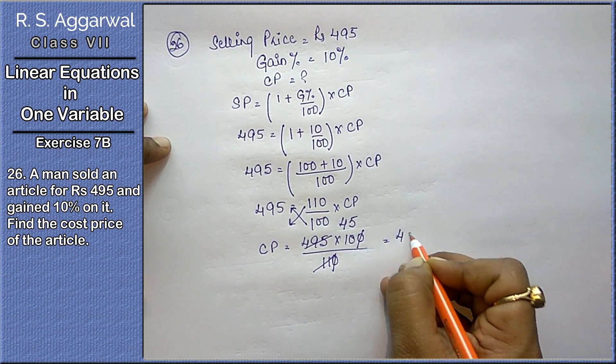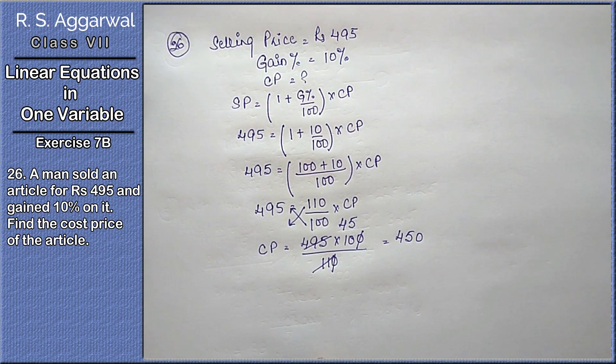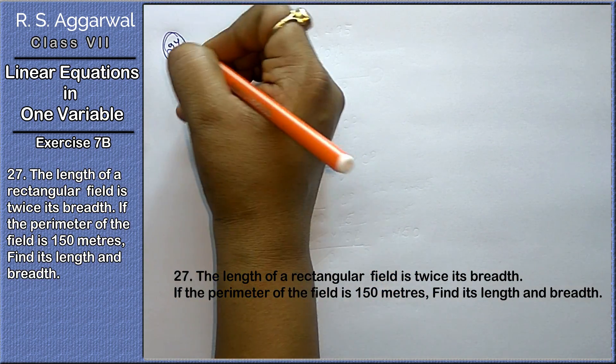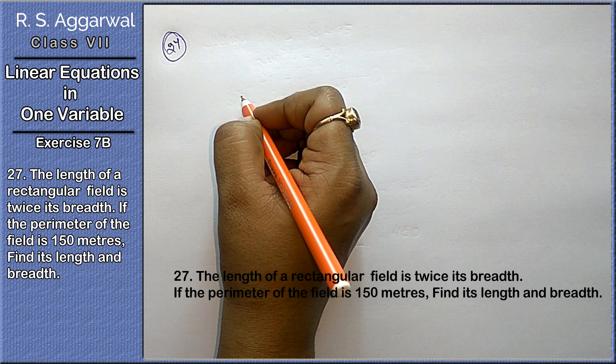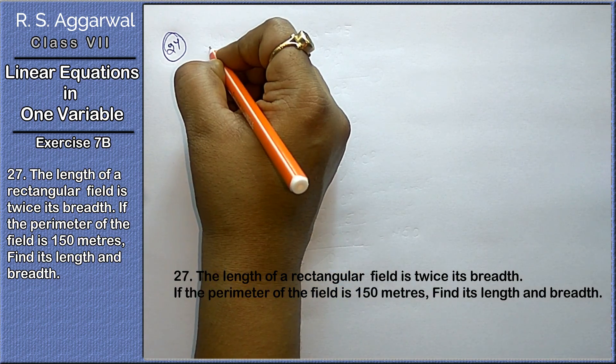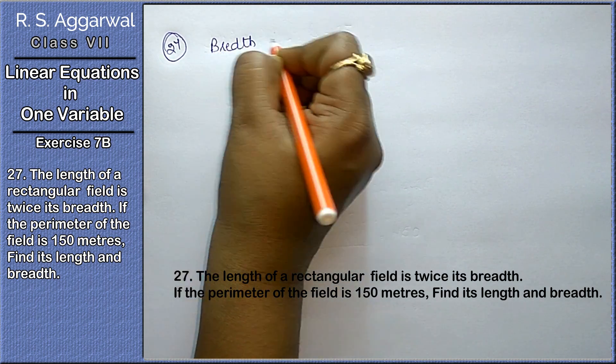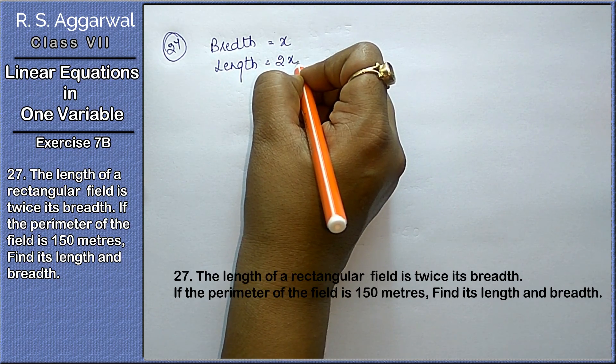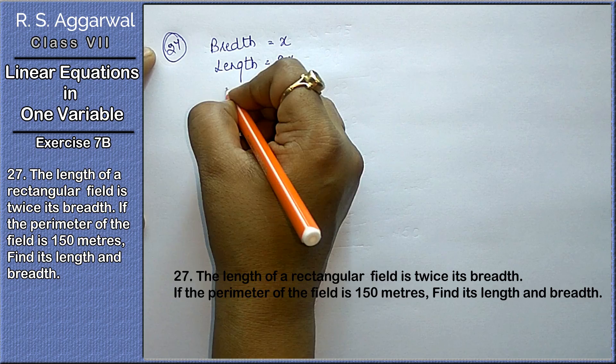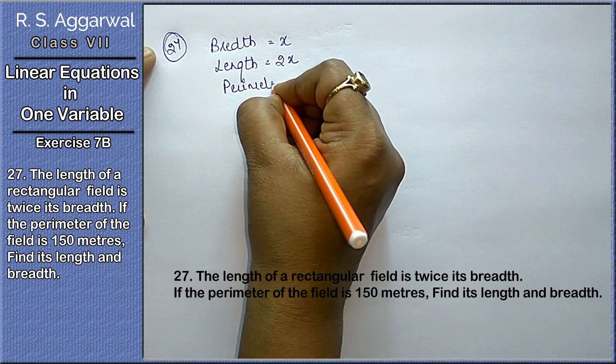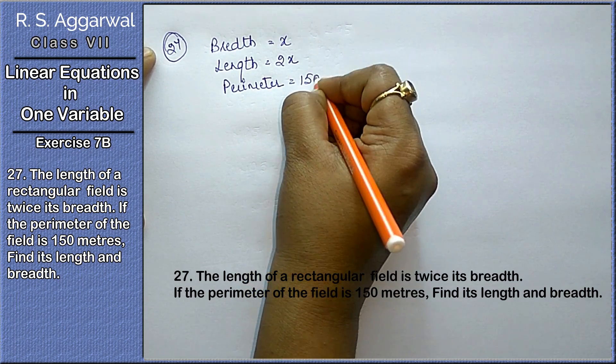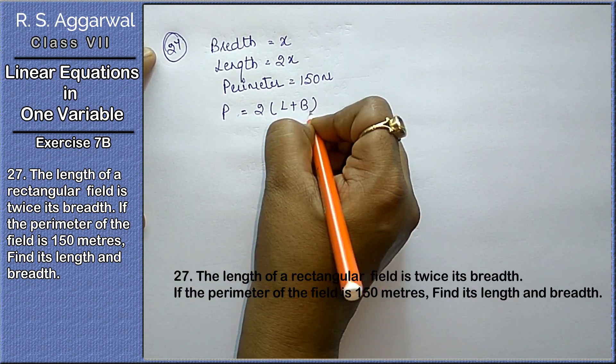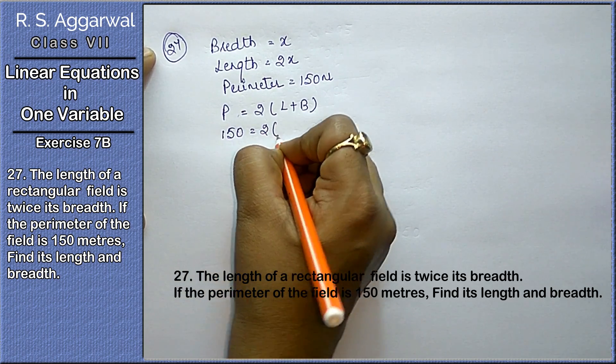Now let's do the next question, 27th question. The length of the rectangular field is twice its breadth. Breadth is not given to us, so let the breadth be x. So length becomes 2x. If perimeter of the field is 150 meters, we have to find out the length and breadth. Perimeter of rectangle is 2 times (length plus breadth).